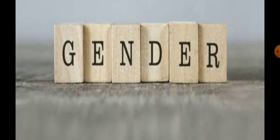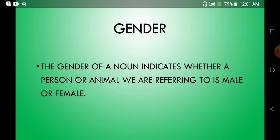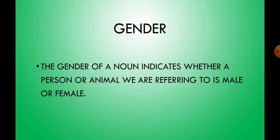What is a gender? We have divided living things like persons, animals and birds into two groups. One group belongs to the boys or man category, and the second group is of girls or women category. The group of boys we call masculine, and the group of girls we call feminine. Together, we call it gender.